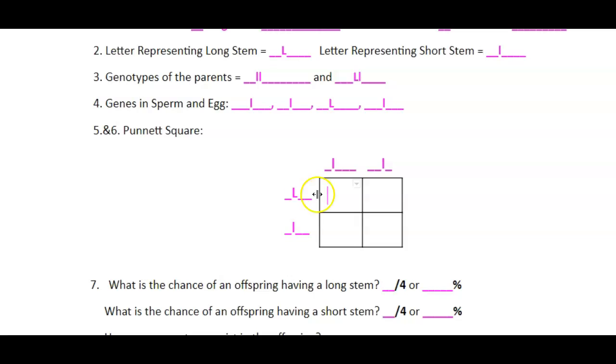Now we just fill in our Punnett square. So here I'm going to have a big L, little L. Over here, big L, little L. Here I'm going to have two little L's. And here I'm going to have two little L's.